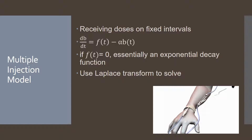Today we're going to be looking at multiple injection models, where a patient receives injections over a fixed interval of time — they get an injection, then nothing happens, then a second injection, and this repeats over an expansion of time. One way to look at this is through the equation dB/dt = F(t) - αB(t).